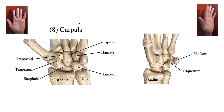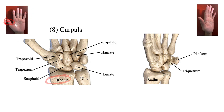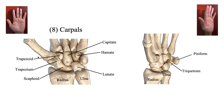Here we have the eight carpals. You can look up in the left corner and see that this is my left hand. You can see my radius, which is on my thumb side, and my ulna, which is on my pinky side. You can also see the thumb's metacarpal and the second, third, fourth, and fifth metacarpals. I also have a picture that's somewhat pronated and gives you a lateral view. These two bones are easier to see from the lateral view because you can tell that the pisiform is on top of the triquetrum.